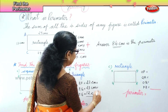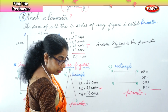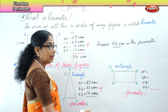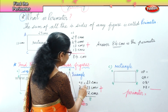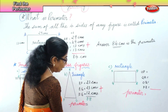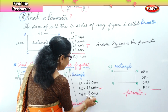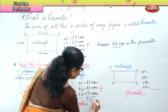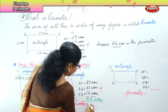You must add these: 23 plus 23 plus 12. Now 3 plus 3 is 6, 6 plus 2 is 8, then 2 plus 2 is 4 and 1 is 5 — so 58. Your answer is 58 centimetres. That is the perimeter of the triangle.